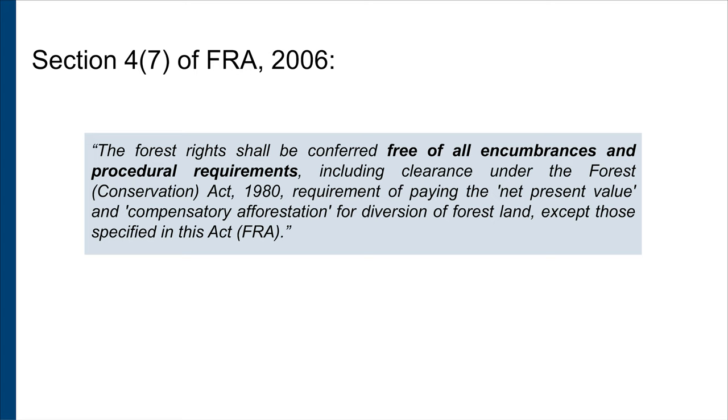Subclauses 2 and 7 of Section 4 address two conservation laws which have historically led to the curtailment of rights of the Scheduled Tribes and OTFDs. Before the enactment of the FRA, even the limited efforts by state governments to regularize forest rights were stalled because of the requirement under the Forest Conservation Act to pay for compensatory afforestation and the net present value for their land and thus obtain forest clearance. Section 4(7) of the FRA removes the requirement for any such payment. The forest right is conferred 'free of all encumbrances and procedural requirements' other than those in the FRA itself.